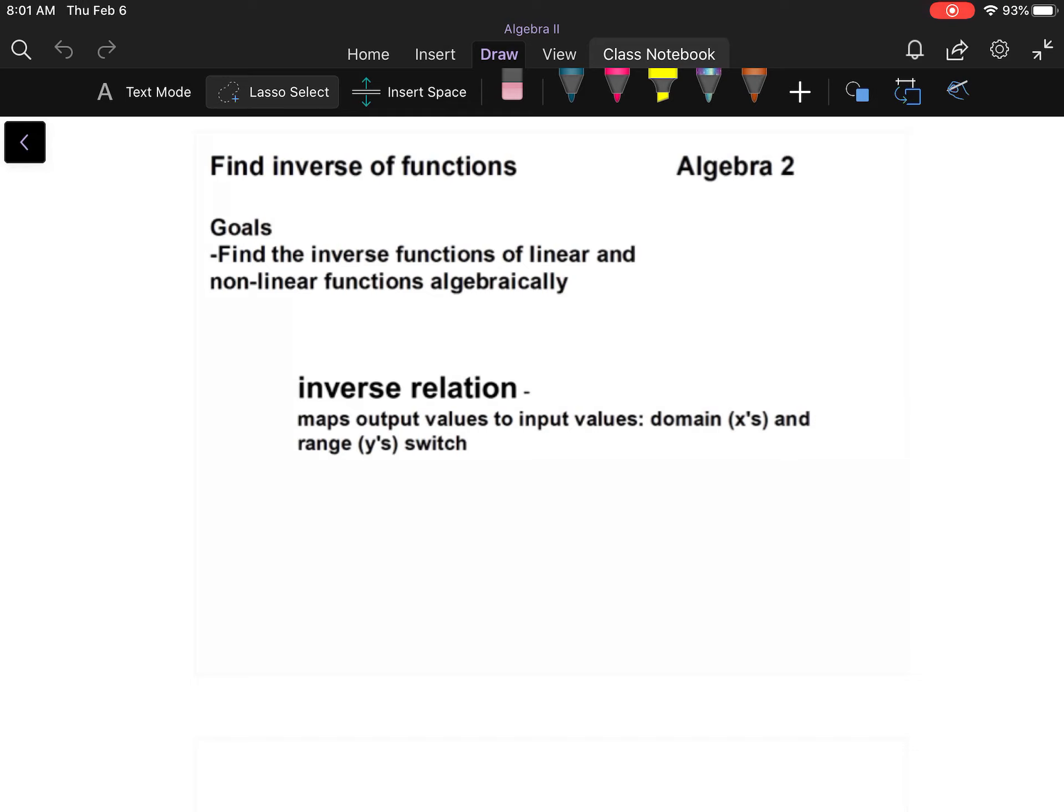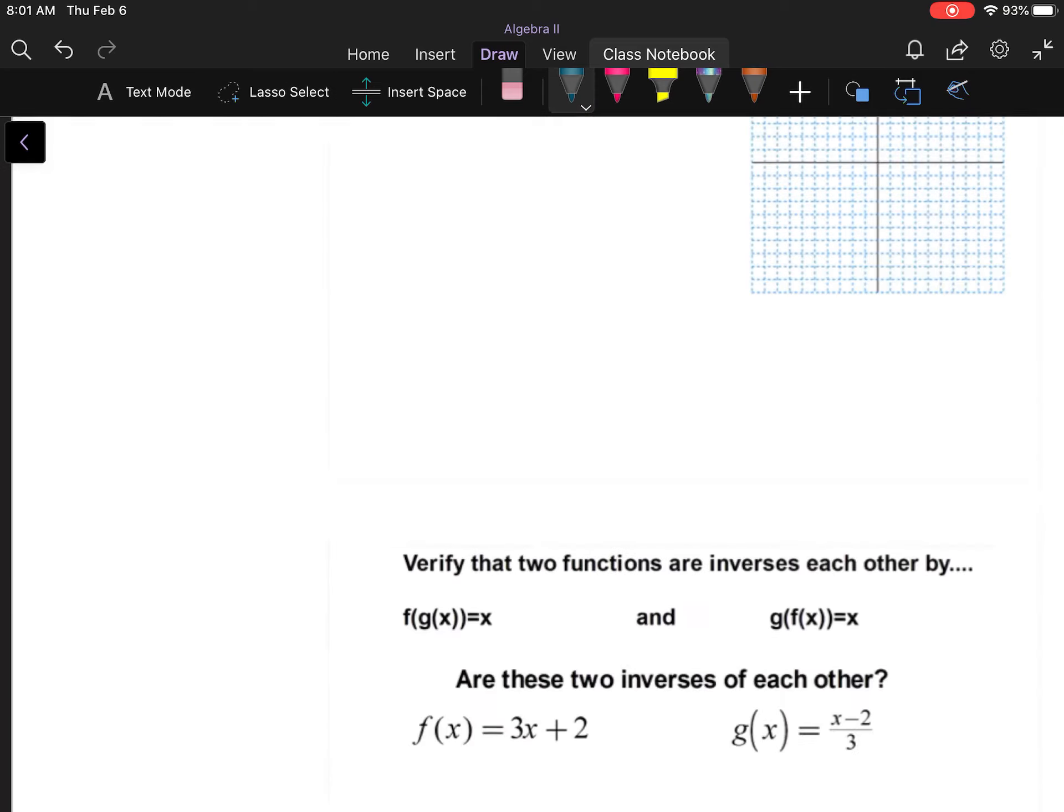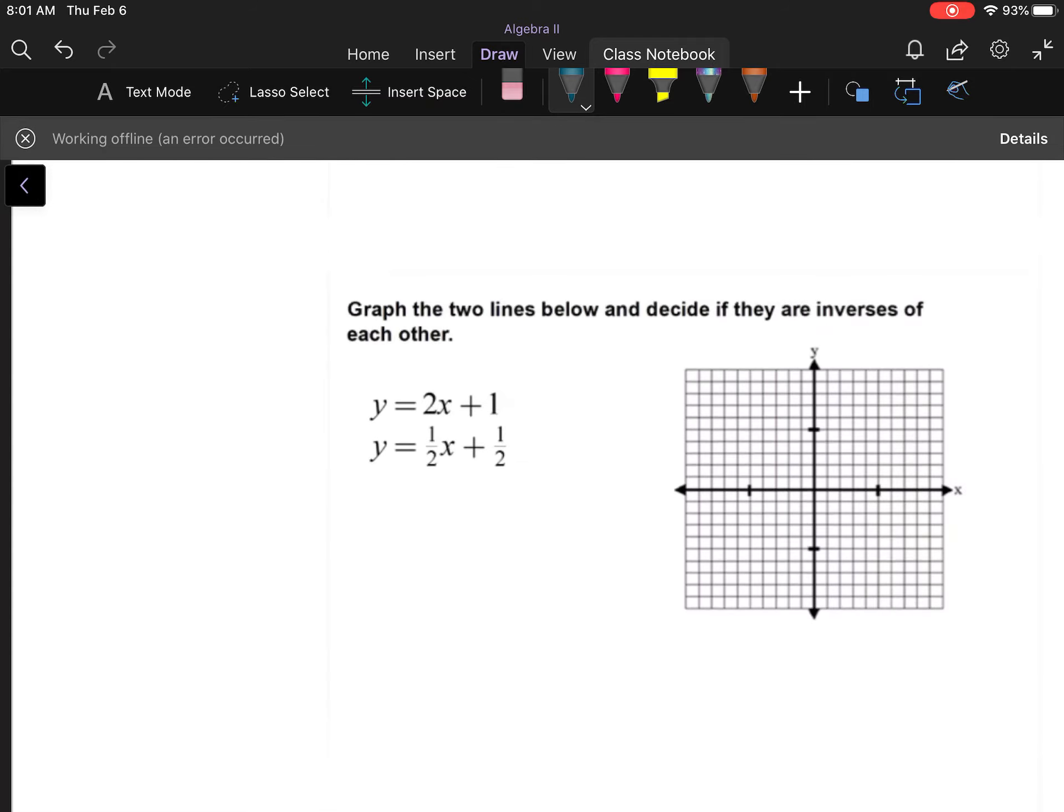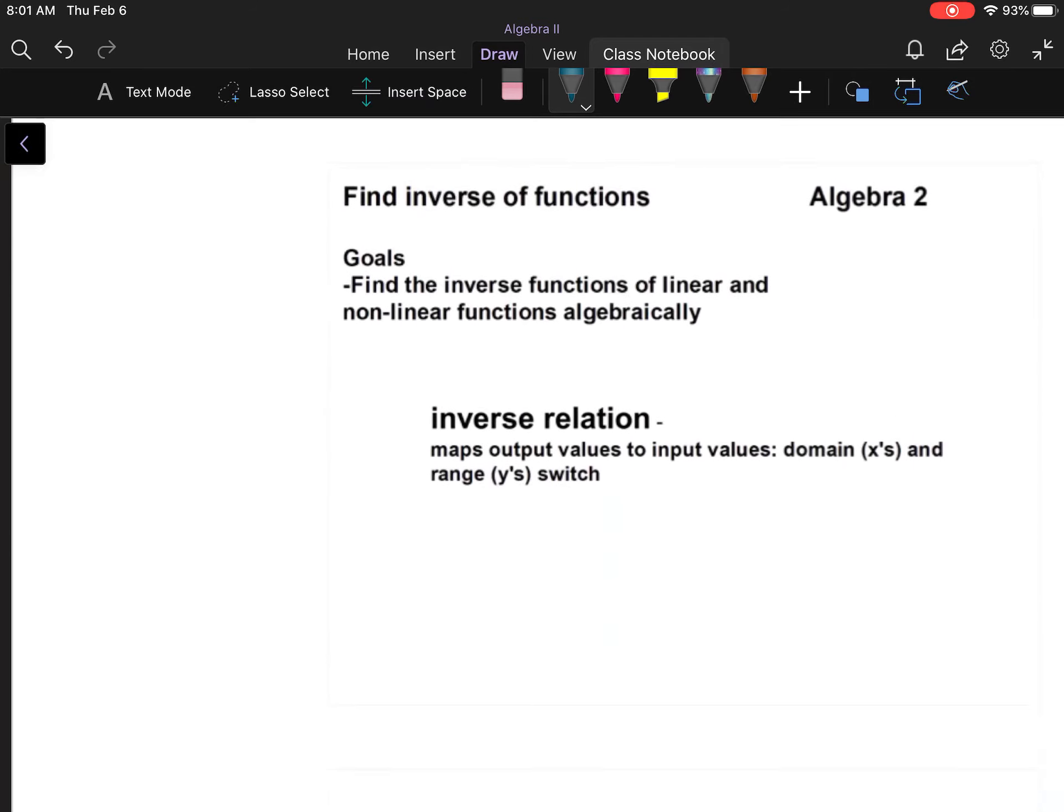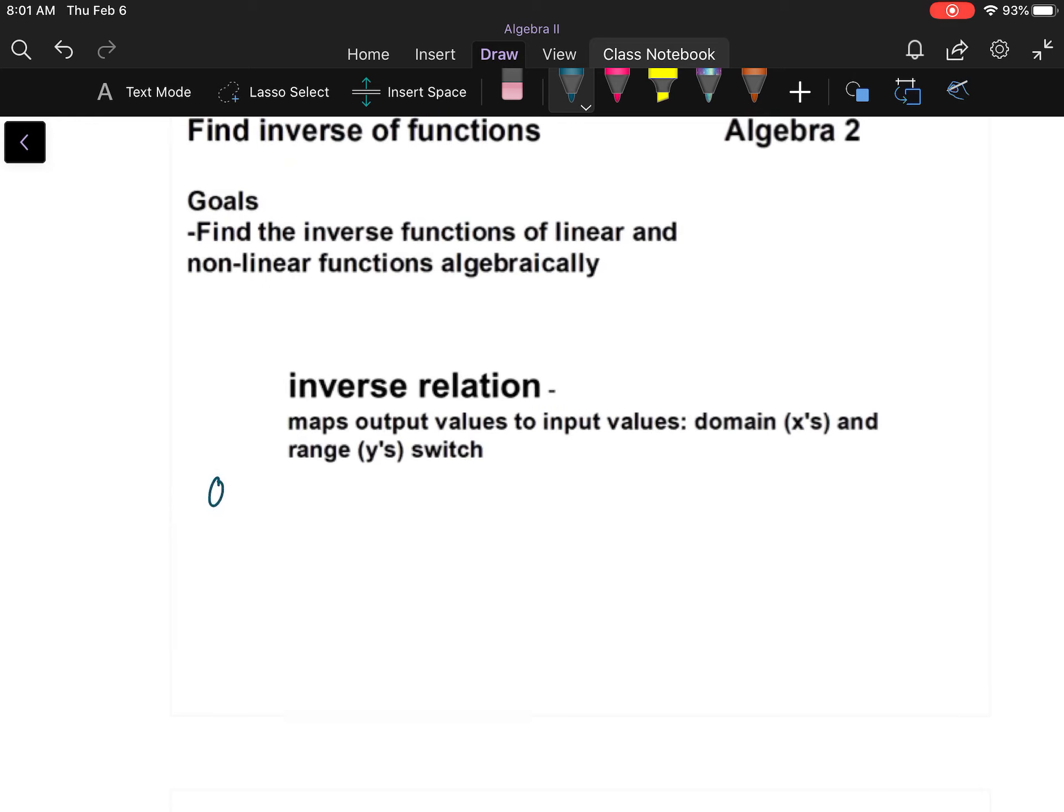In other words, you're going to take your domains, all your x values, and your ranges, and they're going to switch. So your original function, for your domain you got certain numbers, for your range you got certain numbers.